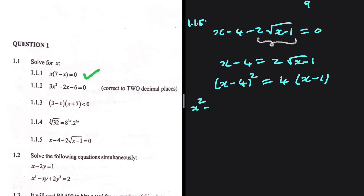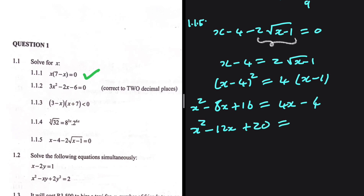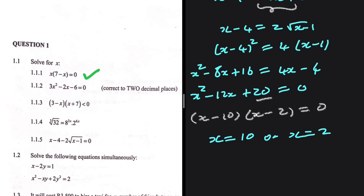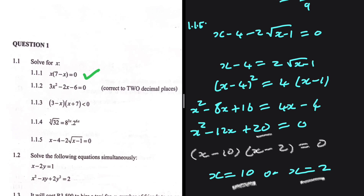Expanding gives x squared minus 8x plus 16 equals 4x minus 4. Rearranging: x squared minus 8x minus 4x equals x squared minus 12x, and 16 plus 4 gives plus 20, all equal to 0. Factors of 20 that add to negative 12 are negative 10 and negative 2, giving (x minus 10)(x minus 2) equals 0. But we need to check whether both solutions hold, since we squared both sides.